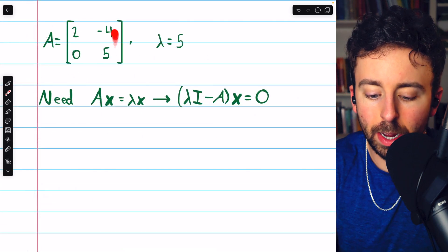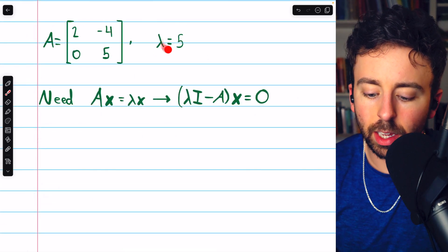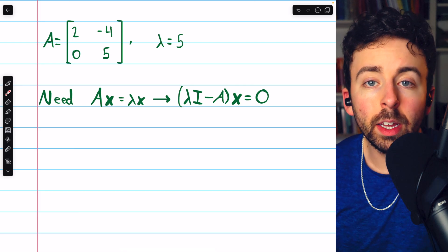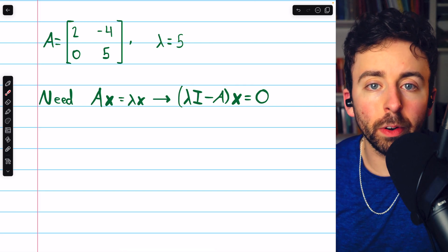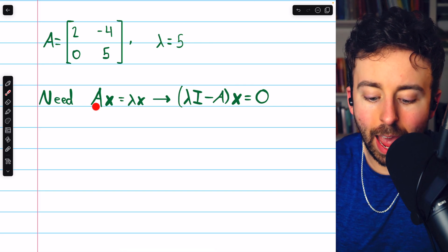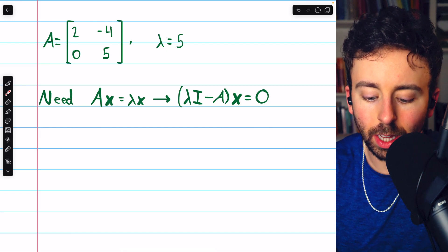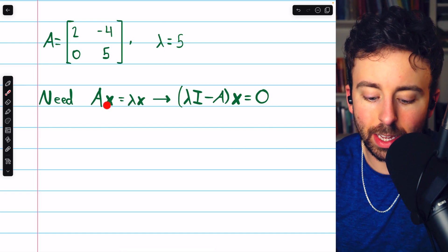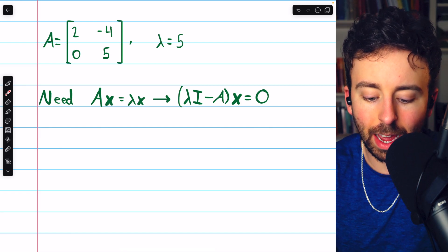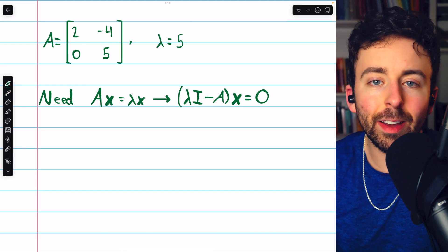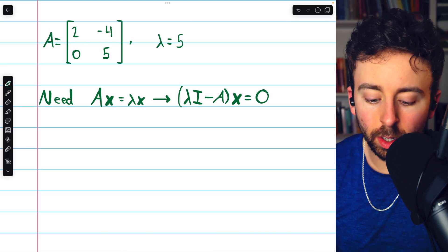Here is our first example, matrix A and the given eigenvalue of 5. Looking for eigenvectors, by definition, we need A times x to equal lambda times x. Any non-zero vector x satisfying this equation is by definition an eigenvector.